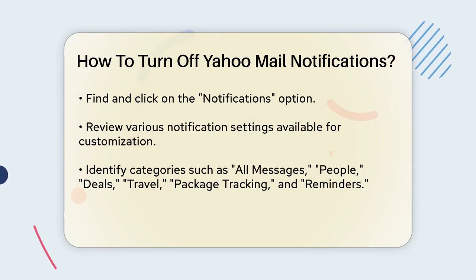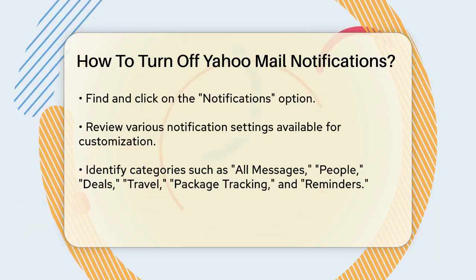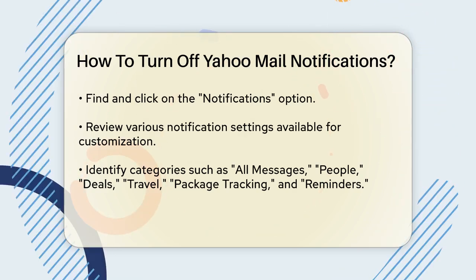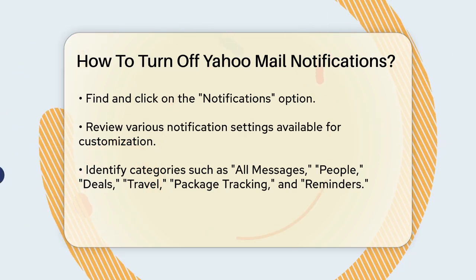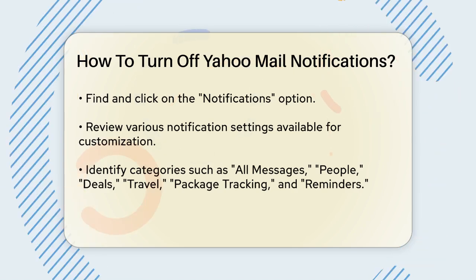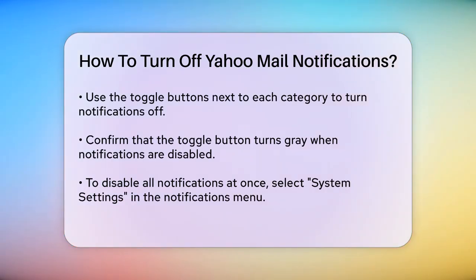To turn off notifications, you'll see a list of categories such as All Messages, People, Deals, Travel, Package Tracking, and Reminders. For each category, there's a toggle button next to it. Simply tap on the toggle button to turn it off.